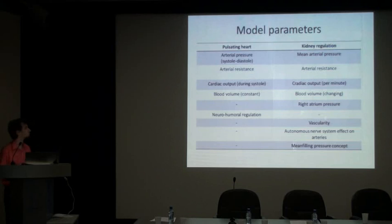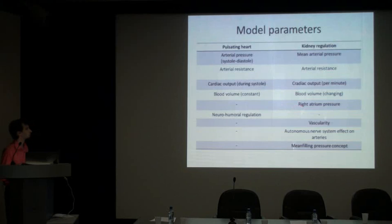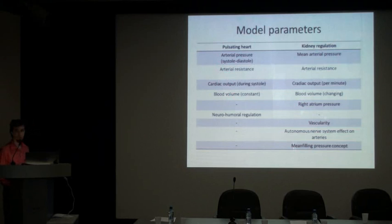The kidney regulation model has mean arterial pressure, arterial resistance, cardiac output, blood volume — which is a very important object of regulation in this model — right atrium pressure, the vascular autonomic system, and the mean filling pressure. In the pulsating heart model, we have oscillating arterial pressure, peripheral resistance, also oscillating cardiac output, and blood volume which is set to constant, with neuro-humoral regulation.